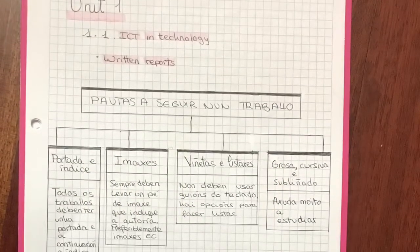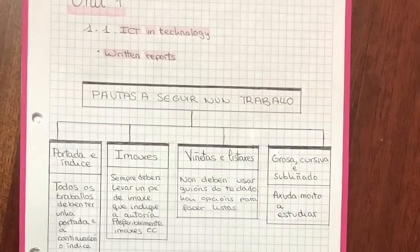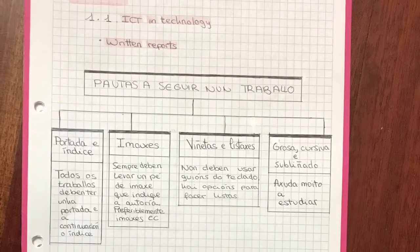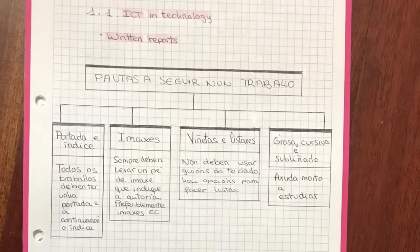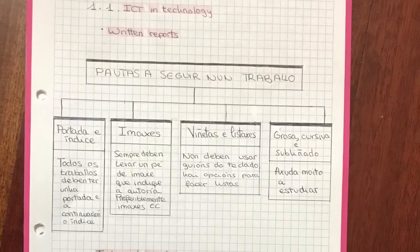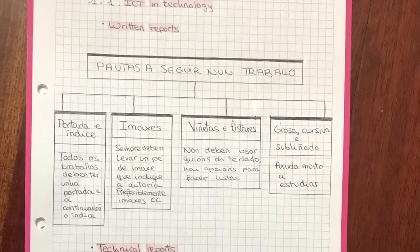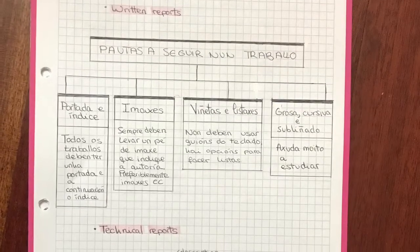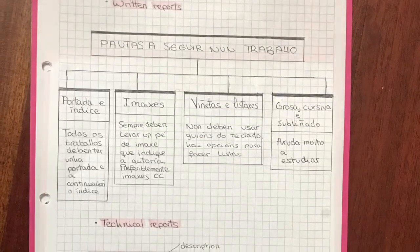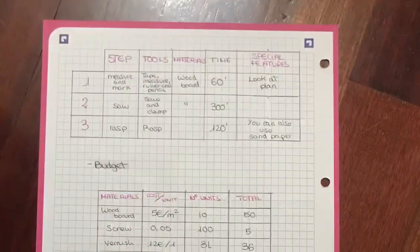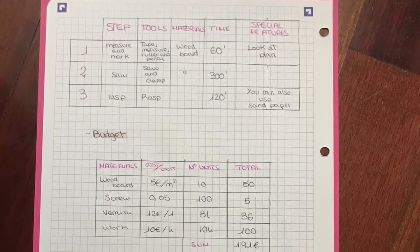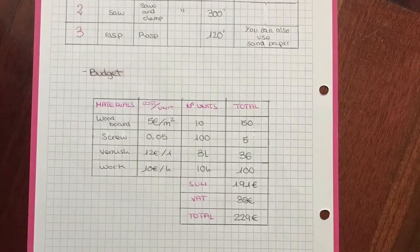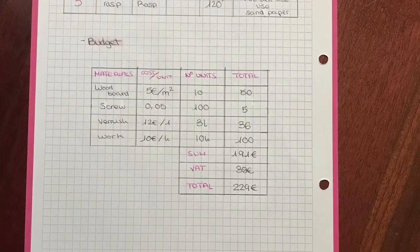This is unit 1. As you can see we learn about ICT in technology, we write reports, and we also learn about technical reports like the national study plans and process sheet. This is the process sheet and we also learn how to do budgets.